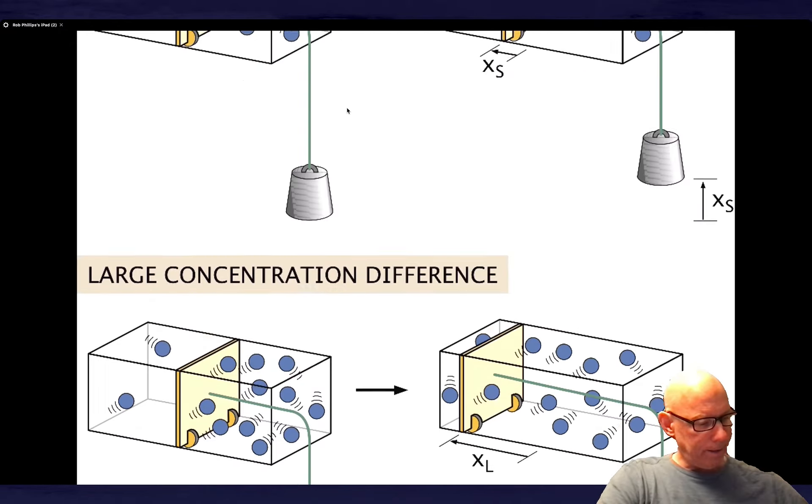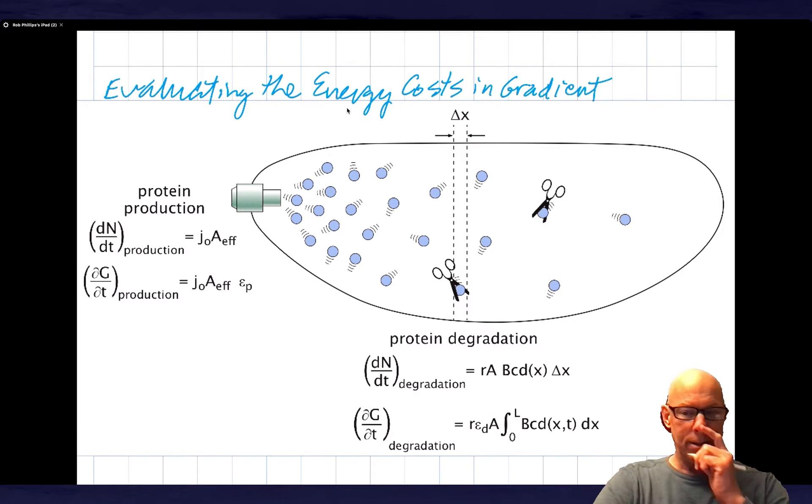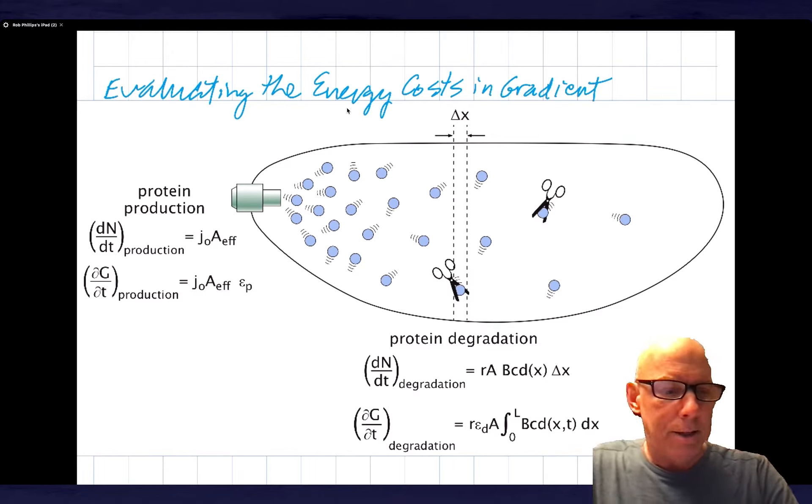So the picture I have in mind is given by this somewhat slightly silly cartoon where I'm imagining there's a factory over here in the anterior end of the embryo. That's because mom has left behind some mRNA. The factory is basically shooting out proteins at a rate which I'm going to call J0. That's a flux, so that's number of proteins per area per time. And so we can compute the rate at which proteins are produced by taking that flux times an effective area. We'll say a little bit about that. And then we can compute the energy cost for that production by using the number of proteins produced per second times the cost per protein.